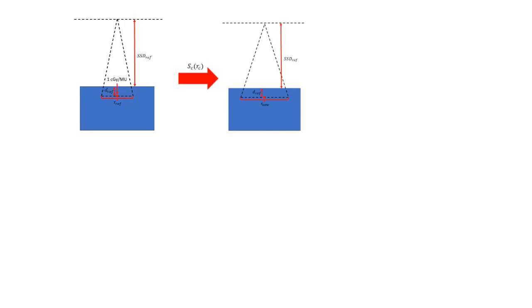Now I want to show what we're doing with one of these PDD calcs. So this is the reference condition here. This is what we established in TG51. We know that the accelerator is giving one centigrade per monitor unit at this point at the reference depth, the reference field size, and the reference SSD. When we apply a collimator scatter factor, we are increasing that collimator field size and accounting for the difference in dose to the calculation point because of changing that jaw size. And that's the step shown here.